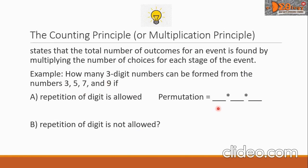Each blank represents the number of choices for each stage. For the first blank, there will be four choices. Since repetition of digit is allowed, there will be four choices again for the second blank and four choices for the third blank. Multiplying 4 times 4 times 4, the answer is 64. There are 64 three-digit numbers.